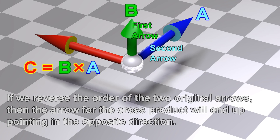If we reverse the order of the two original arrows, then the arrow for the cross product will end up pointing in the opposite direction.